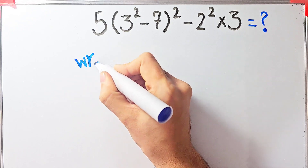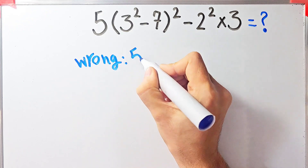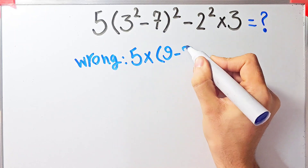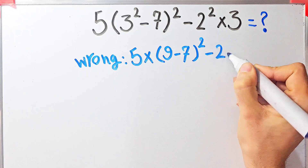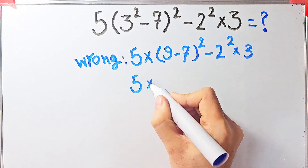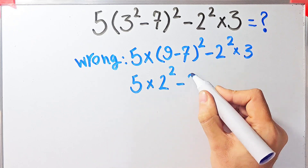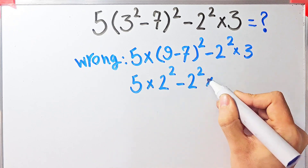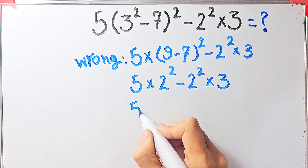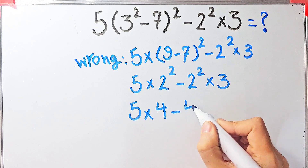Some people solve this question like this: they say five times three to the power of two, which equals nine, then minus seven, then to the power of two, minus two to the power of two, then times three. So five times nine minus seven equals two, then to the power of two, minus two to the power of two, which equals four, then times three. Five times two to the power of two, which equals four.